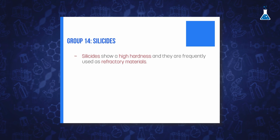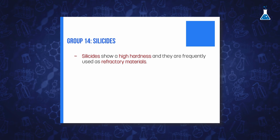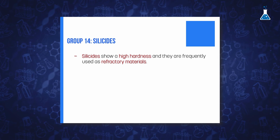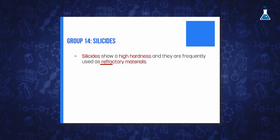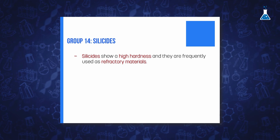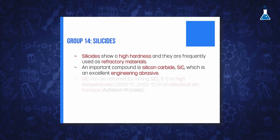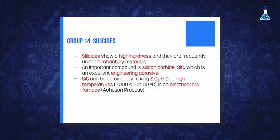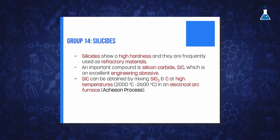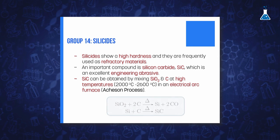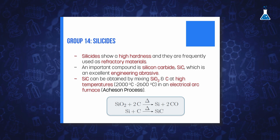Silicides are hard materials and, although their melting points are generally lower than the corresponding carbides, they are frequently used as refractory materials. Interestingly, when silicon and carbon are mixed at high temperatures between 2000 and 2600°C in an electric furnace, they form silicon carbide, which is an excellent engineering abrasive.